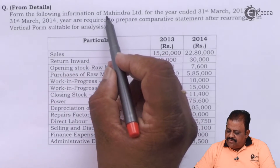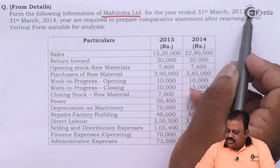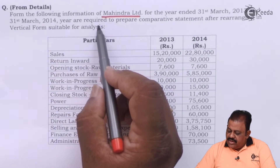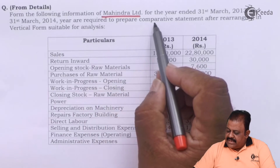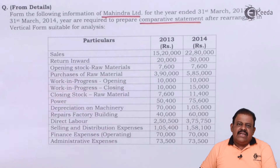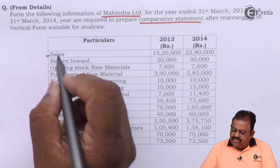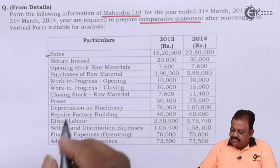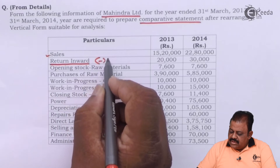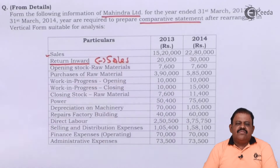From the following information of Mahindra Limited for the year ended 31st March 2013 and 31st March 2014, you are required to prepare a comparative statement after rearranging in vertical form suitable for analysis. Sales will be the first item of the income statement, with sales returns deducted from sales to arrive at the figure of net sales.